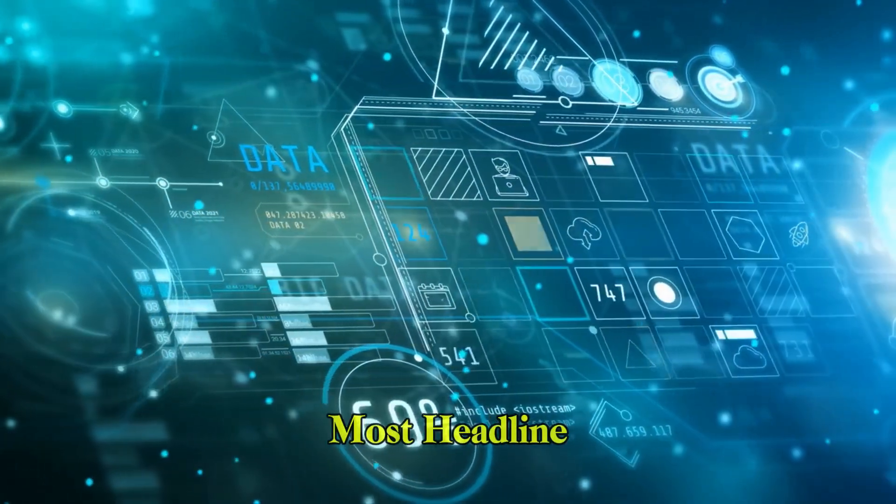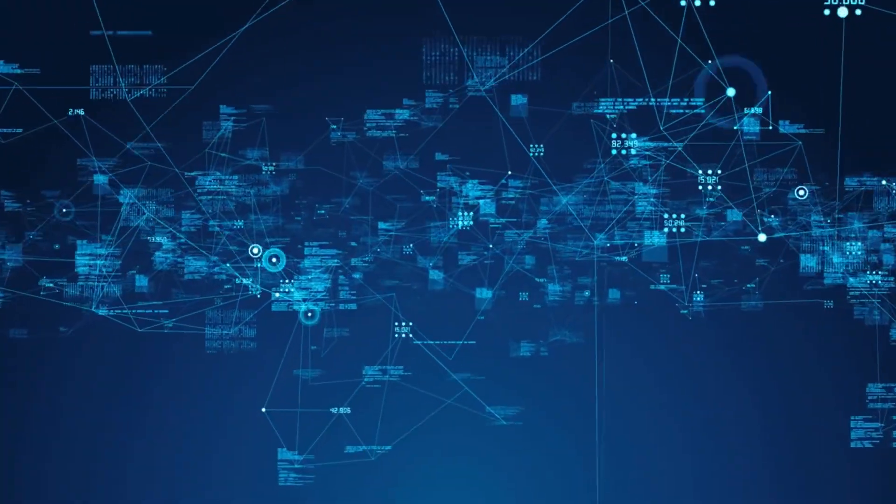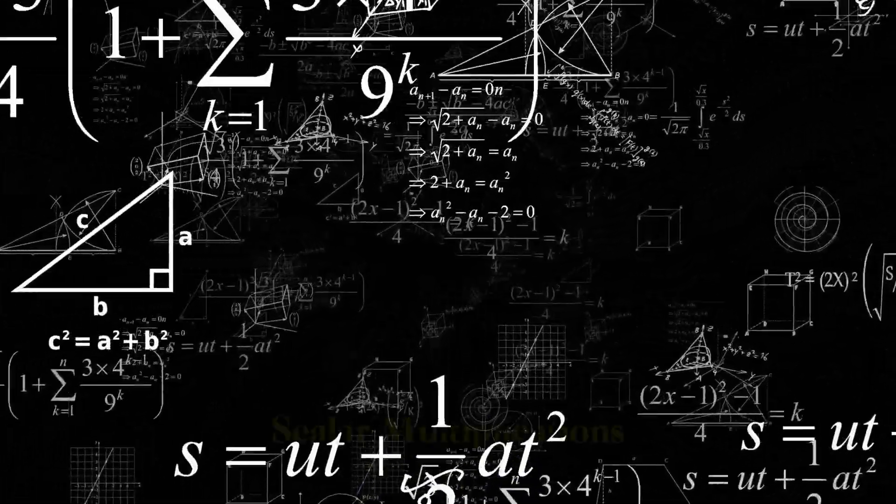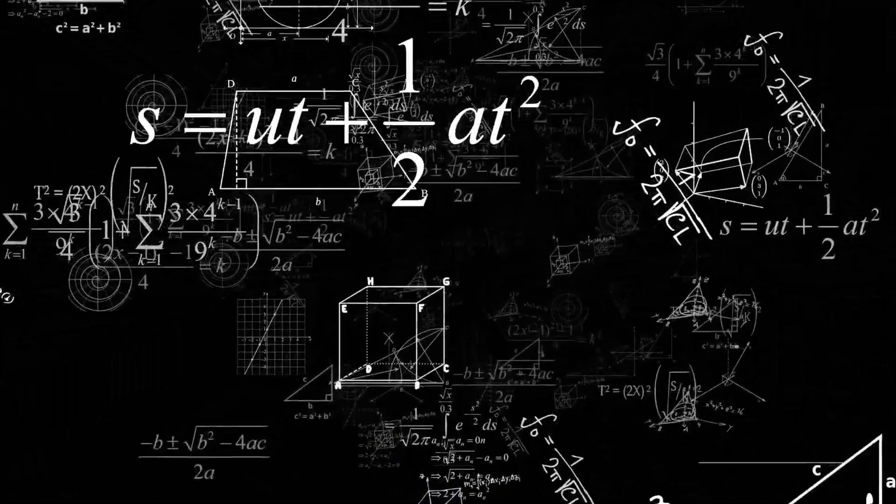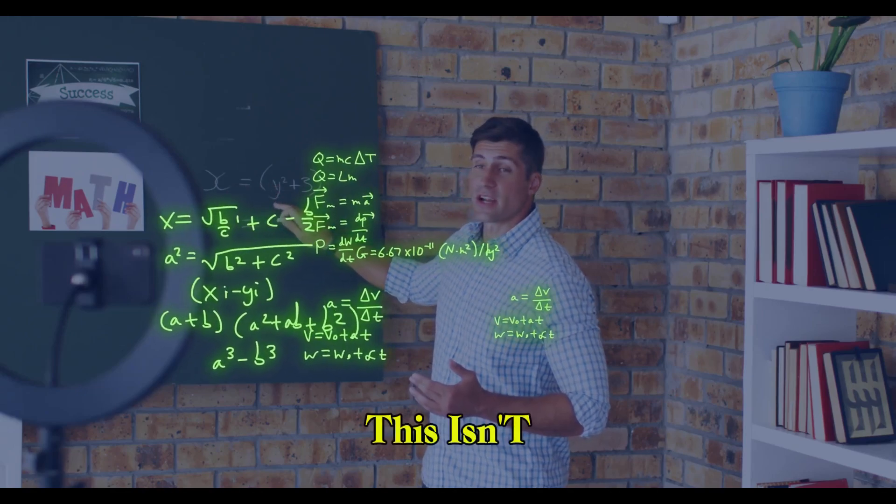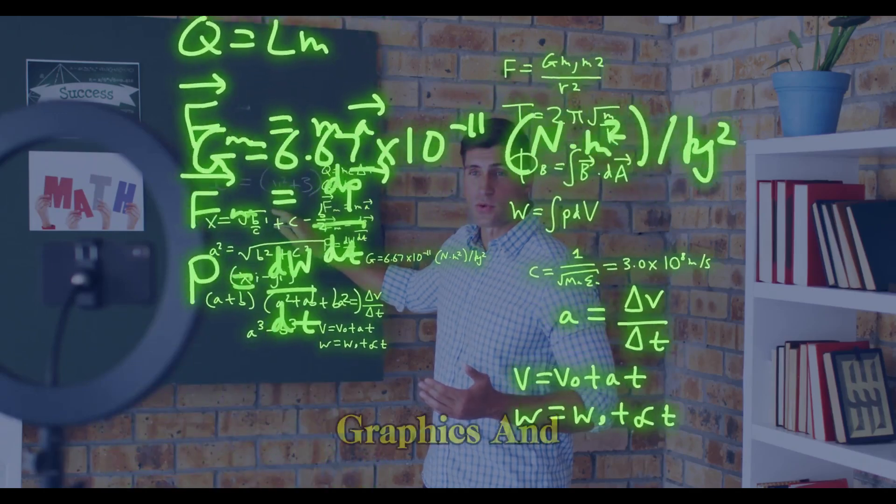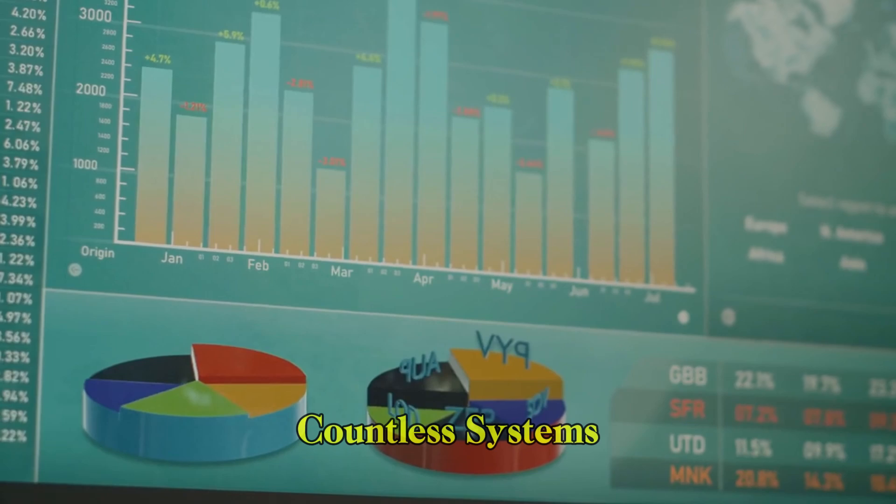In one of its most headline-worthy achievements, AlphaEvolve broke a mathematical record that had stood since 1969. Mathematician Volker Strassen's algorithm used 49 scalar multiplications to multiply 4x4 matrices. AlphaEvolve discovered a method using only 48. This isn't just trivia—matrix multiplication is foundational across AI, graphics, and more, so even minor gains ripple across countless systems.